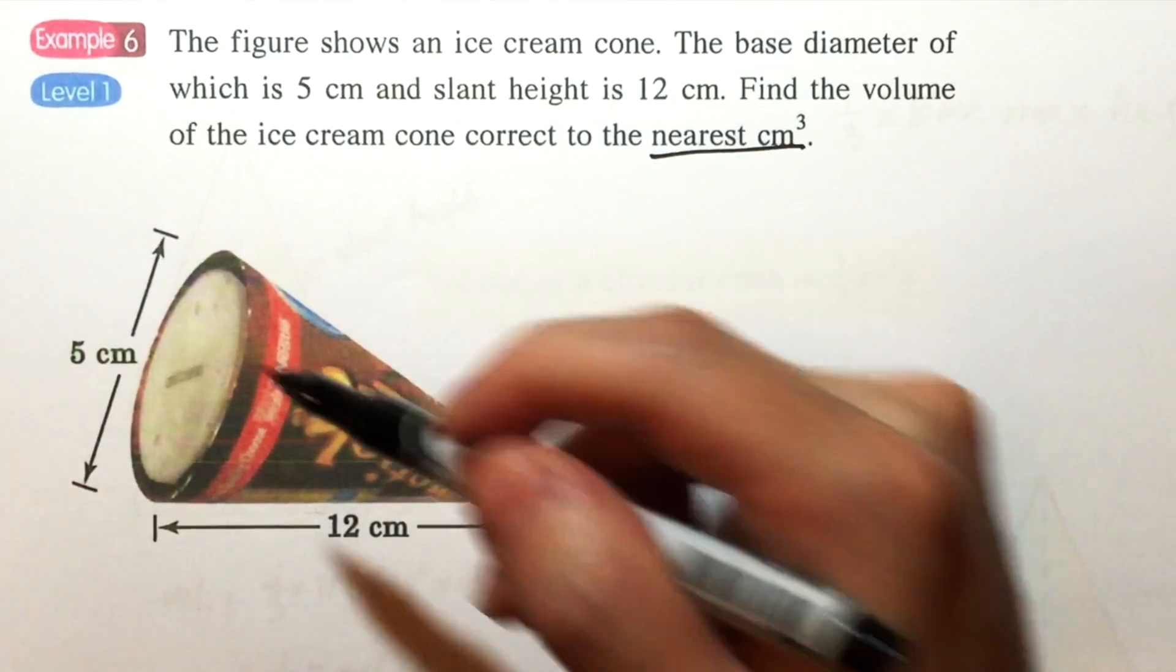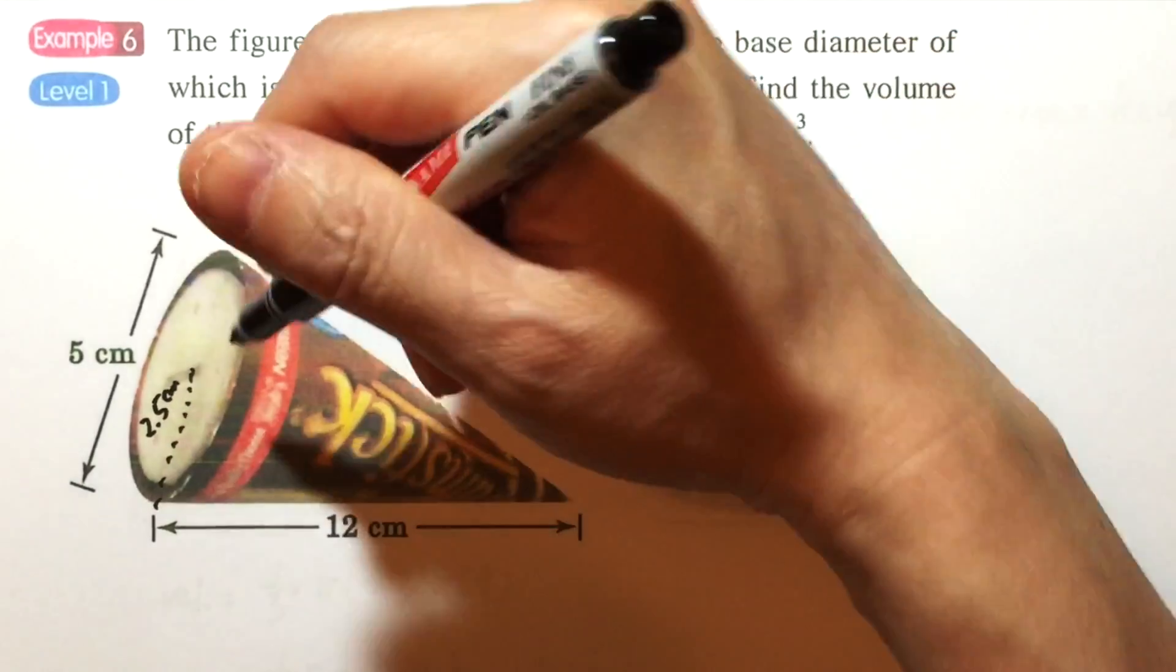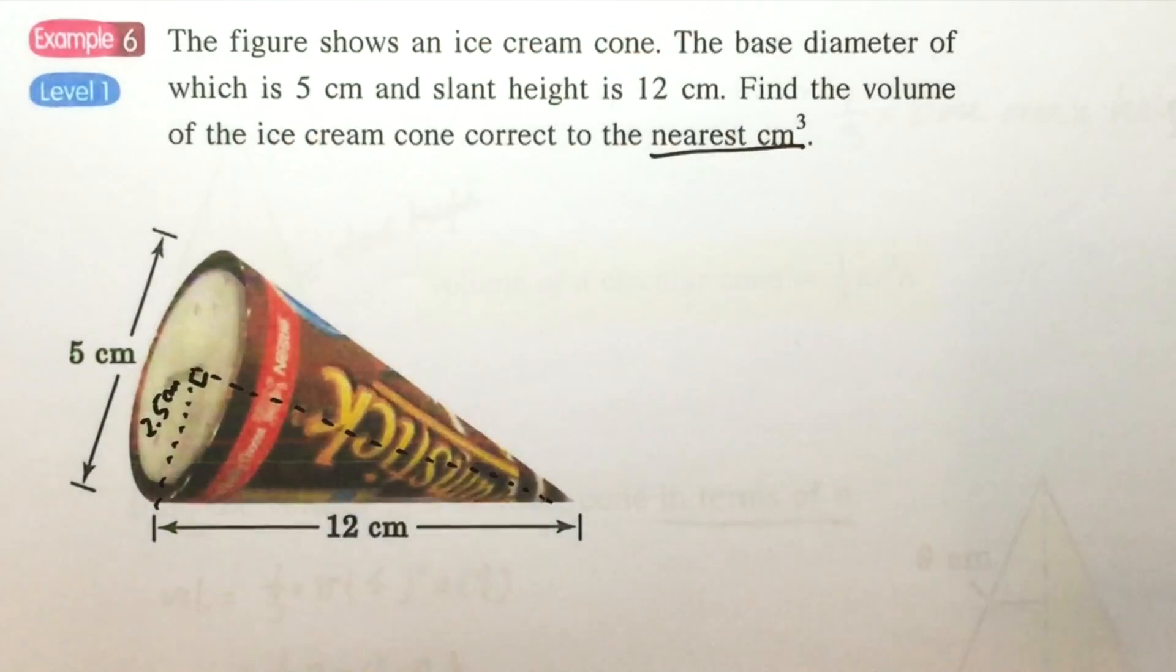So this will be the radius of the cone, which is 2.5 cm. And we can apply the Pythagorean theorem to find the height of the cone.